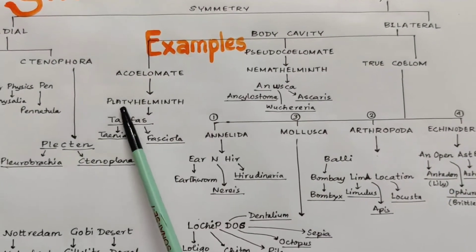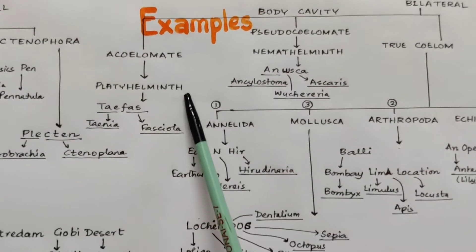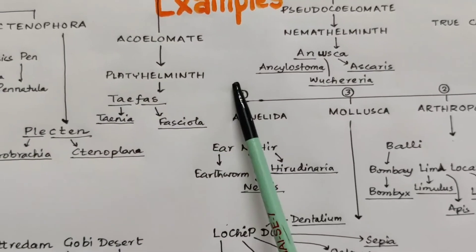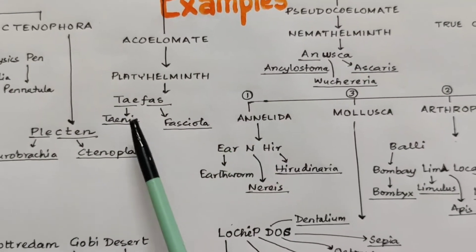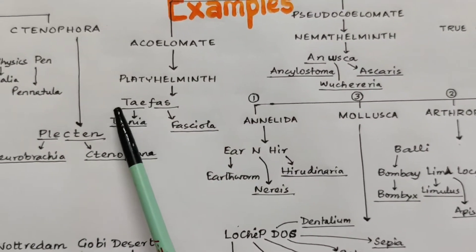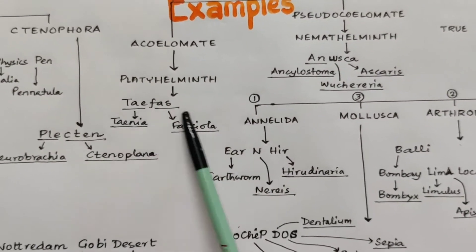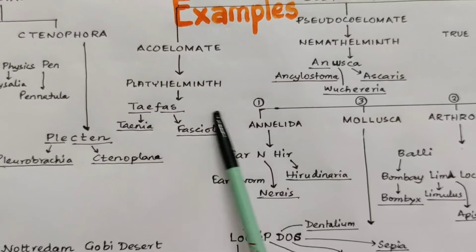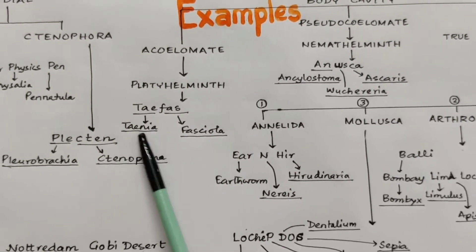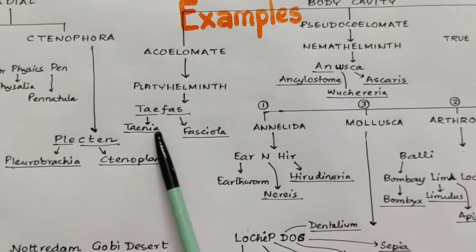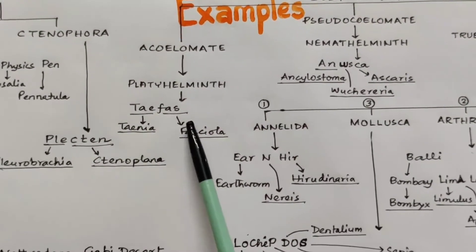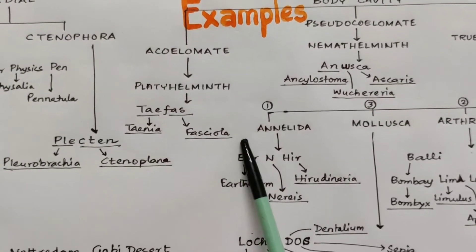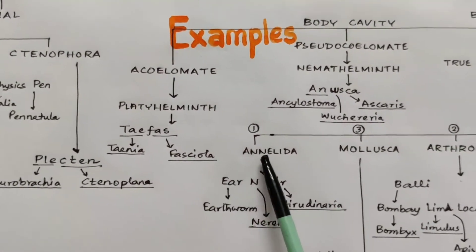For Acoelomate, we have only one phylum — Platyhelminthes, meaning flatworms. We have to remember the shortcut 'Tephes.' Taenia means tapeworm, and 'Fes' for Fasciola, which means liver fluke.